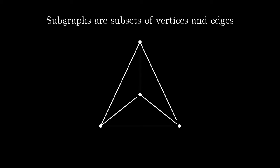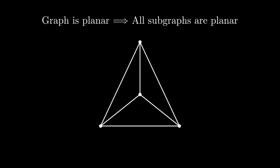A subgraph is defined as a subset of vertices and edges of some original graph. An important observation to make is that if the original graph is planar, then all of its subgraphs must be planar as well. This follows from the fact that since none of the original edges intersected, then no subset of those edges intersect either.